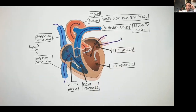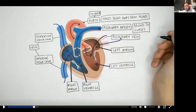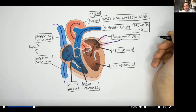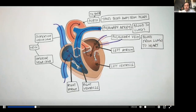Blood then returns back to the heart via the pulmonary veins. Pulmonary means lungs — going to or from the lungs. Vein means it's taking blood to the heart. If it's going away from the heart it's an artery, so the aorta and pulmonary artery carry blood away. The vena cava and pulmonary veins transport blood to the heart — so they are veins.